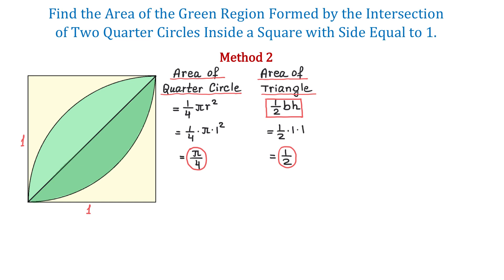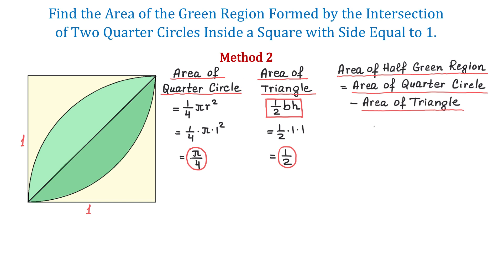The area of half of this green region equals the area of a quarter circle minus the area of the triangle, which equals π over 4 minus 1/2. This is the area of half of the green region. To find the area of the entire green region, we need to double this quantity.